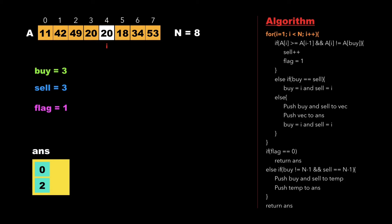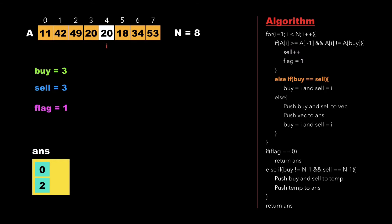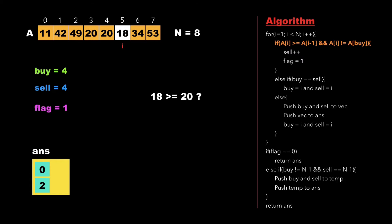Now i again points to the value 20 where we check whether 20 is greater than or equal to 20. Since 20 equals 20, we check the other condition: whether a[i] is not equal to a[buy]. This condition fails, so we check whether buy and sell is not equal to a[i-1]. Since 18 is not greater than 20, we again check whether buy is equal to sell, and this condition is correct. Therefore we update the values of buy and sell to i which is 5, and increment i.